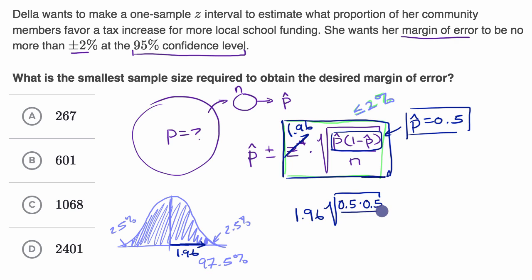Let me set up an inequality. We want 1.96, that's our critical value, times the square root of 0.5 times 0.5 over n needs to be less than or equal to 2%, or 0.02.